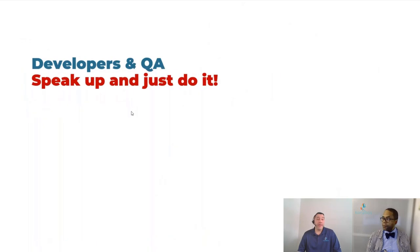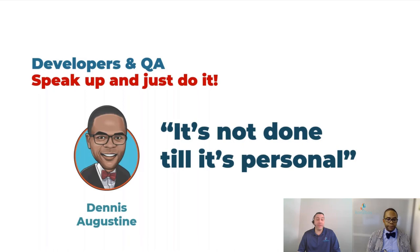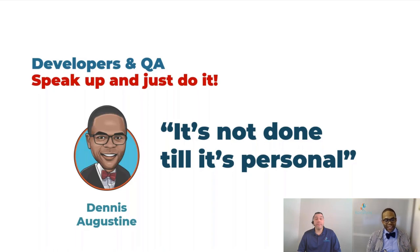All of you UX designers out there, get acquainted with things you can do even before you define any of those stories to help personalization take root in your organization. For example, your hero banner — rather than just showing one version, you can show three or four different versions and make that part of the story: we're going to implement personalization for each of these different variations. And developers in QA — speak up and just do it. You know what Sitecore is capable of. As Dennis said, it's not done until it's personal.